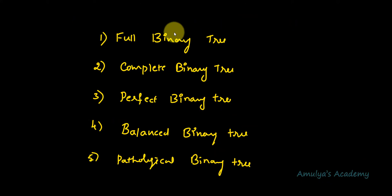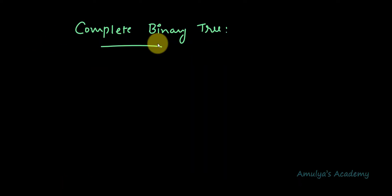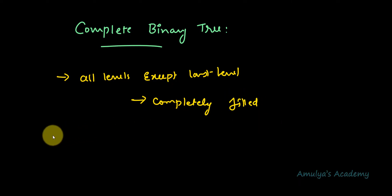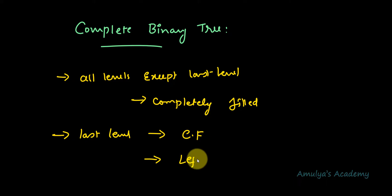Next, let's talk about the complete binary tree. It is a type of binary tree in which all levels except the last level are completely filled with nodes, and in the last level, nodes need to be filled from left to right — or in other words, all nodes are as far left as possible. The definition is a little confusing, so let's look at an example.